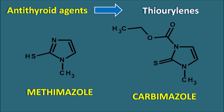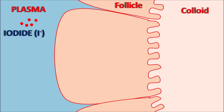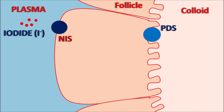Now let us see how these antithyroid agents inhibit the synthesis of thyroid hormones. In the plasma and thyroid follicle, iodide is absorbed into the follicle where it iodinates tyrosine residues to produce thyroid hormones. One important step is the uptake of iodide via the NIS — sodium-iodide transporter. Another pump on the inner membrane is the pendrin protein, which takes up iodide at the inner membrane, transporting it along with sodium into the follicles.